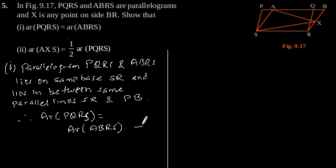Let's say this is our equation 1. Now, the second part: show that area of AXS is equal to half of area of PQRS.